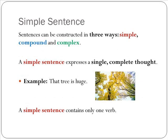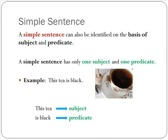First, let us begin with the three basic sentence types. Sentences can be constructed in three ways: simple, compound, and complex. A simple sentence expresses a single, complete thought. For example: that tree is huge. A simple sentence contains only one verb. A simple sentence can also be identified on the basis of subject and predicate. A simple sentence has only one subject and one predicate.